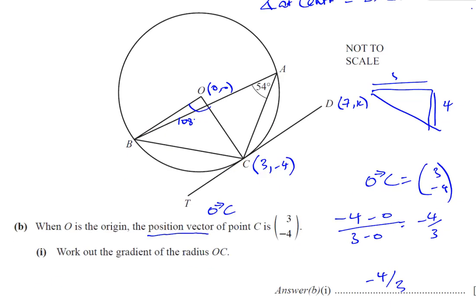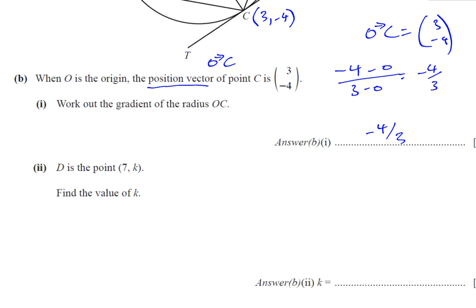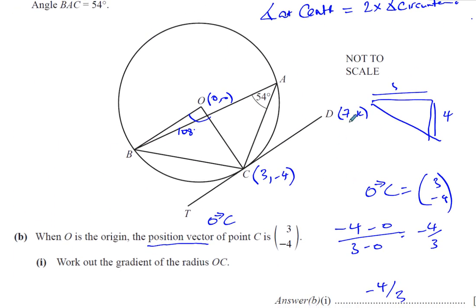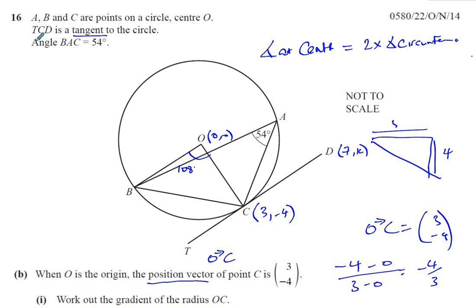Whenever you see a question like this and you get stumped, dig for some information. They told us TCD is a tangent. Why did they tell us it's a tangent? Obviously that's got something to do with the question. What do we know? The tangent meets the radius at right angles.